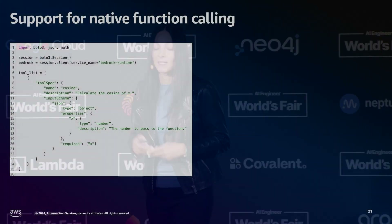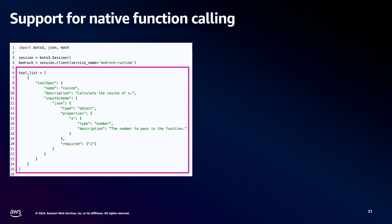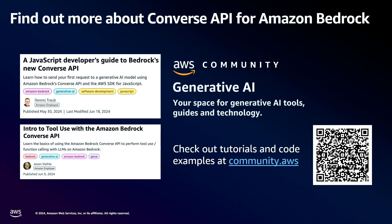For function calling, the support is built in for models that support it. You implement this by defining a tool list — where 'tool' is equivalent to the functions you want to give the model access to — and then pass that list of tools in the Converse API call. For more information, there's a link to our generative AI space on community.aws with tutorials and code examples across different languages.